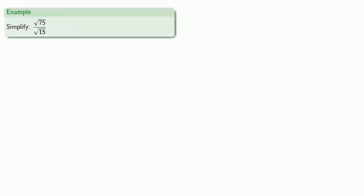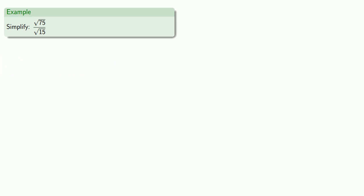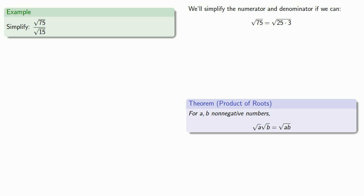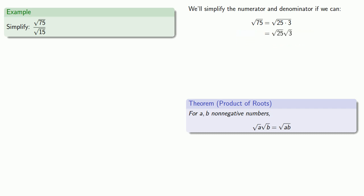Let's see if we can simplify square root of 75 over square root of 15. Let's simplify the numerator and denominator if we can. Square root of 75 — we can try to simplify as square root of 25 times 3. The square root of a product is the product of the square roots, and the square root of 25 is 5, so this simplifies to 5 radical 3.